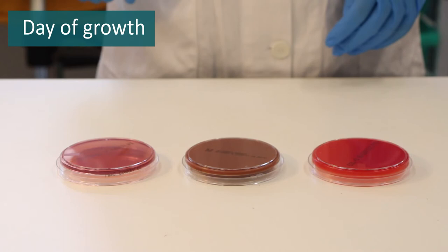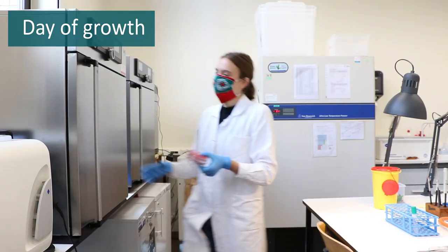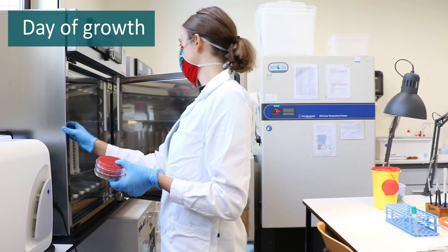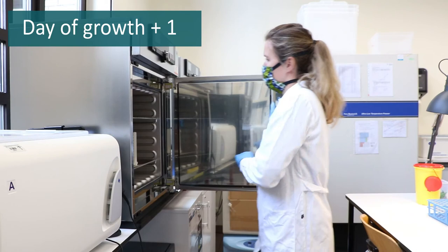Selective media only allow growth of a specific group of bacteria and inhibit growth of other bacteria. An example is McConkey medium with crystal violet, which only allows growth of gram-negative bacteria and inhibits growth of gram-positive bacteria. Inoculated plates are incubated overnight.